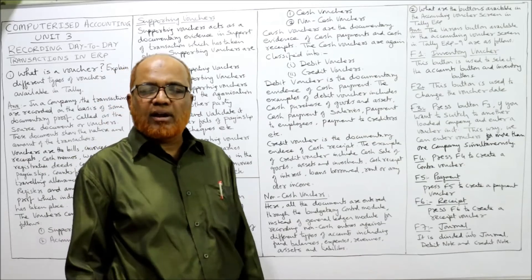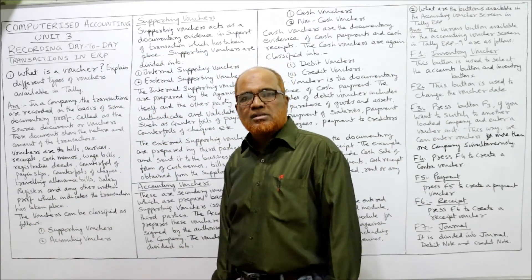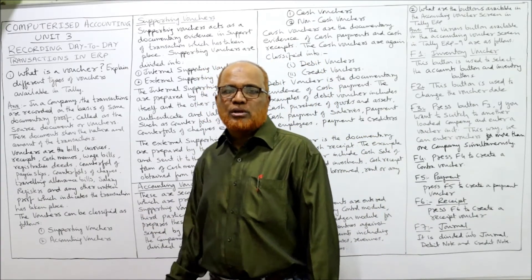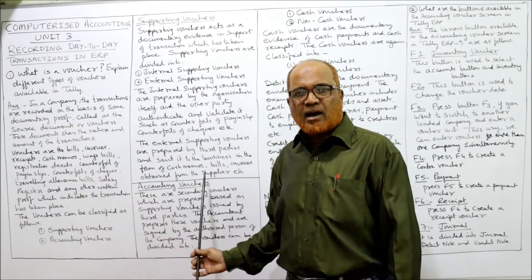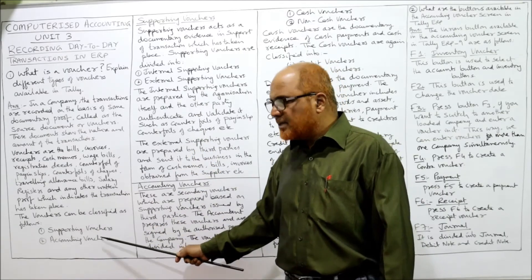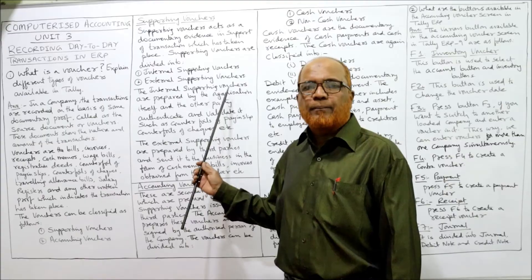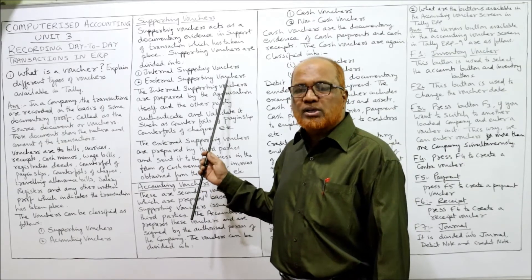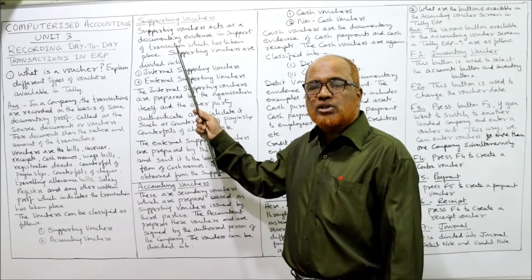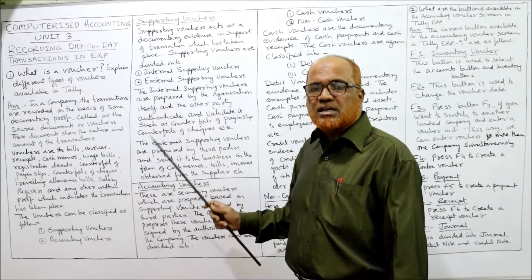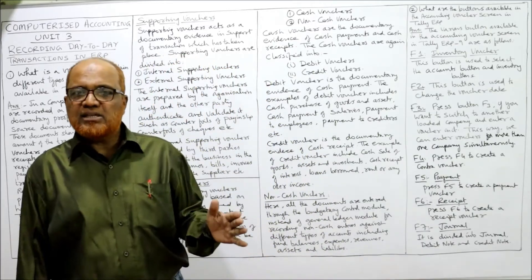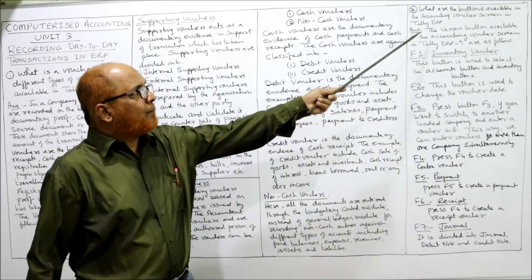This completes the explanation of what vouchers are and their classification. Vouchers are classified into supporting vouchers and accounting vouchers. Supporting vouchers are internal or external. Accounting vouchers are cash vouchers or non-cash vouchers, and cash vouchers are further divided into debit vouchers and credit vouchers.